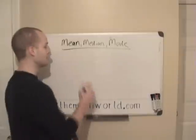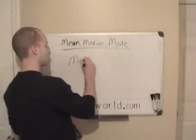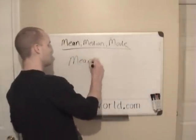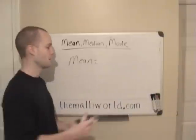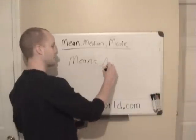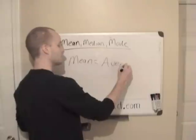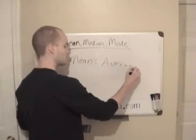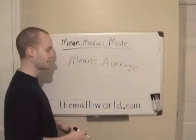The first thing we're going to look at is mean. When someone says they want to find the mean, they're looking for the average of a set of numbers. And this is how you find the average.